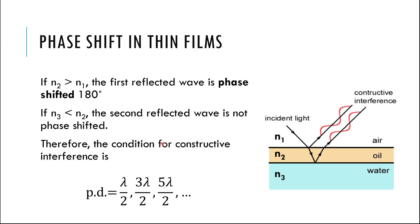The rules for constructive and destructive interference get flipped because now, based on the reflection, the two waves start somewhat out of phase. If you want constructive interference, you need the path difference to be half a wavelength — that offsets the phase shift and brings the waves back in phase. So the path difference of half a wavelength, or one and a half, or two and a half wavelengths, gives constructive interference in this specific thin film situation.